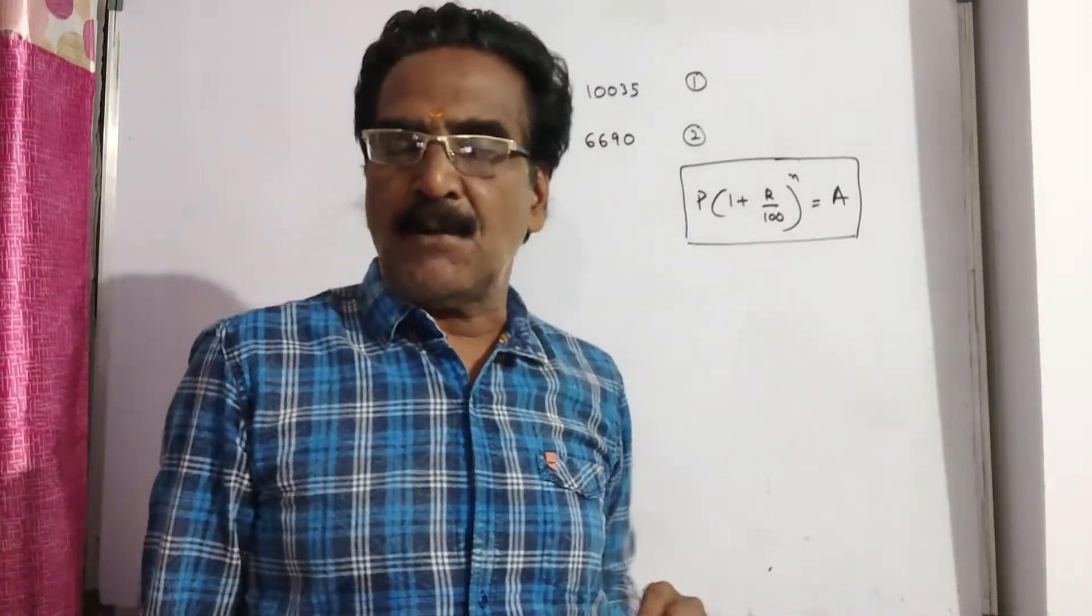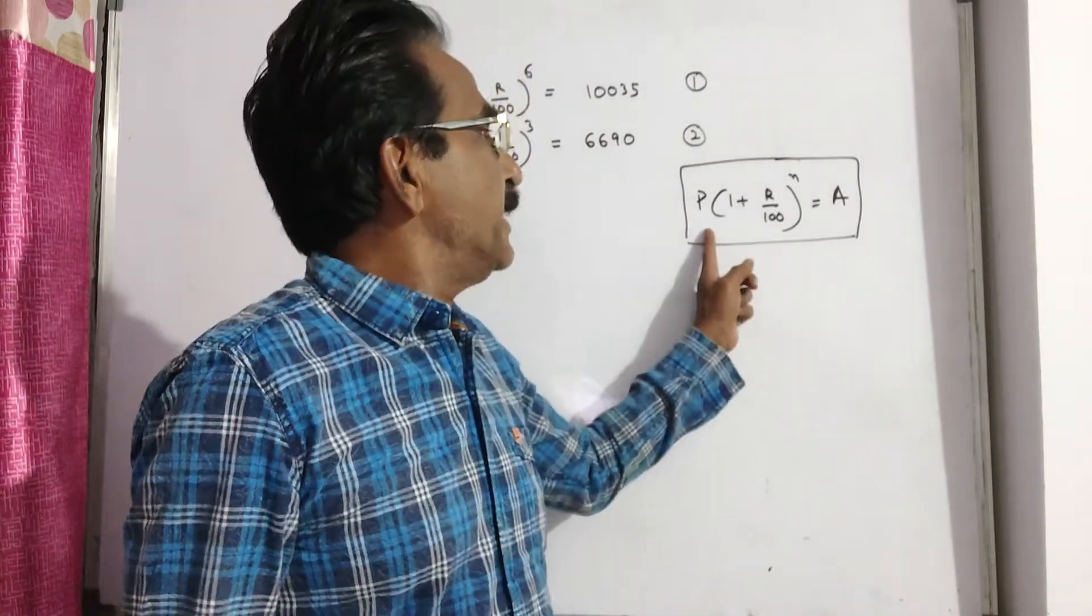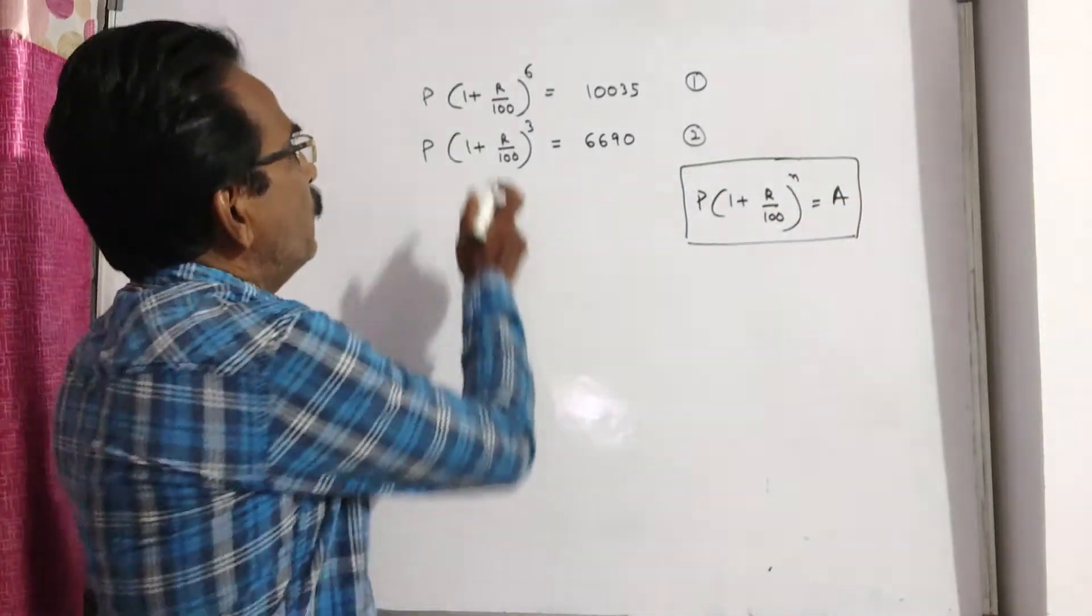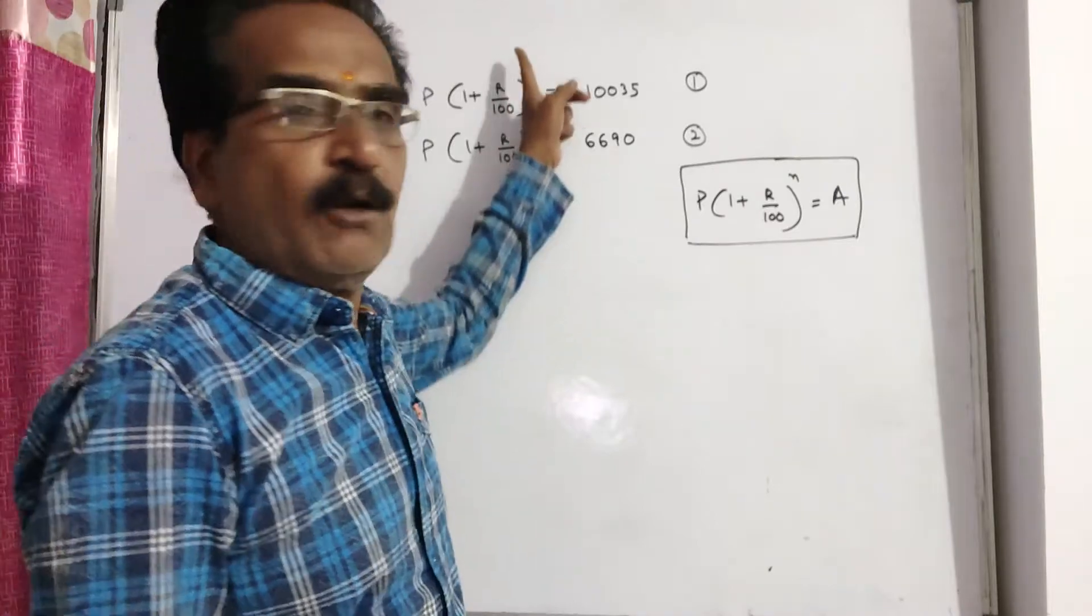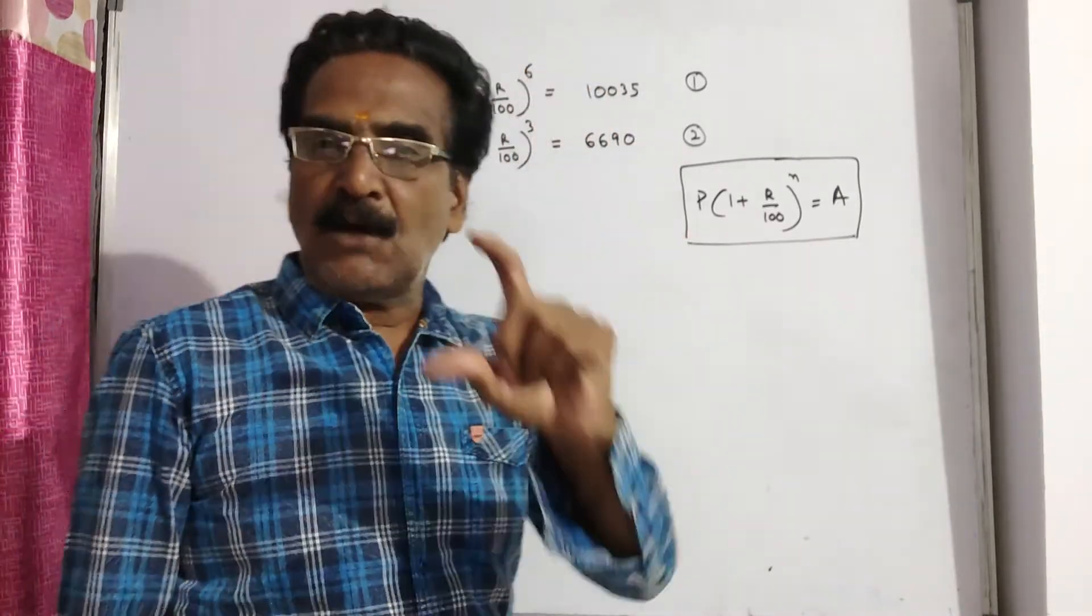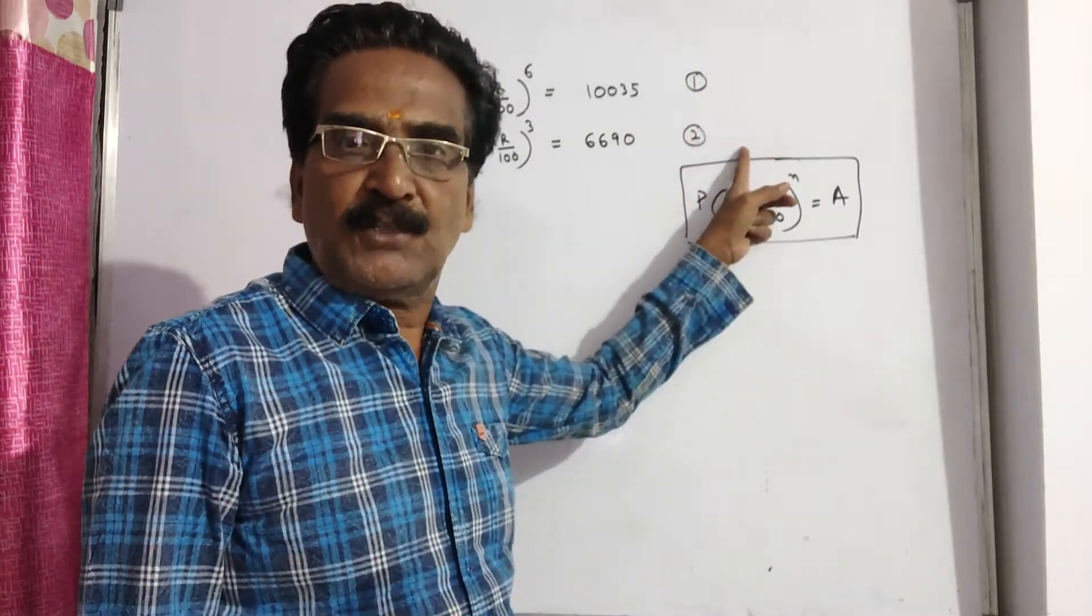See friends, compound interest amount principle we know. P into 1 plus r by 100 whole power n is equal to A. So, P into 1 plus r by 100 whole power 6 is given, whole power 3 is given. Now, let's say this is equation 1, this is equation 2.